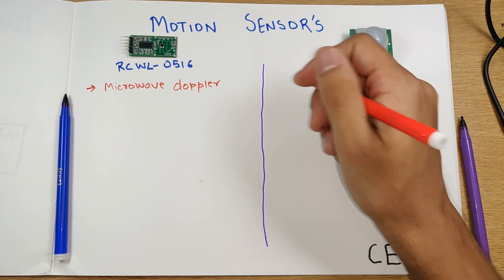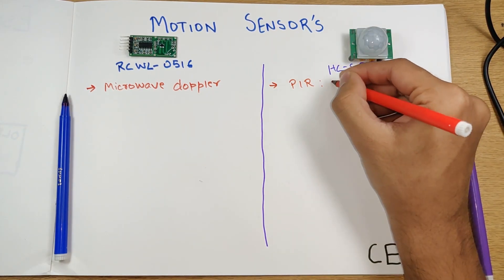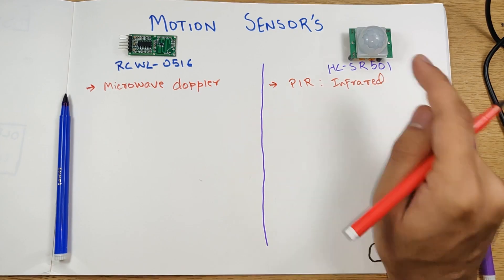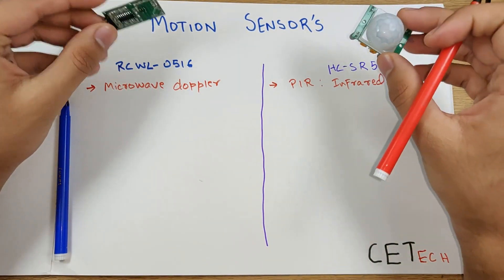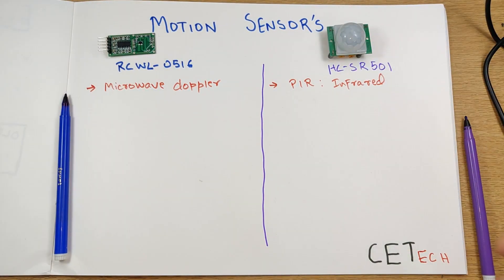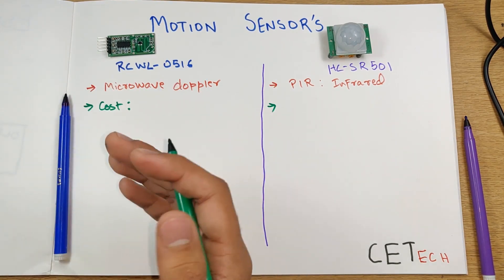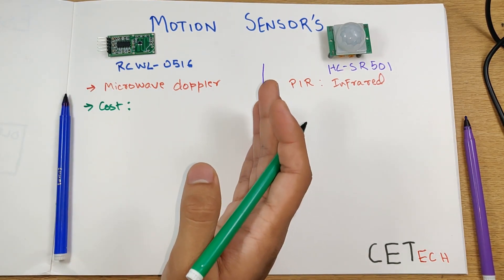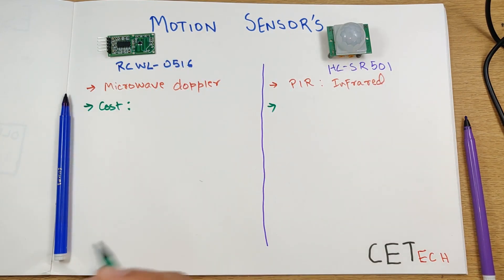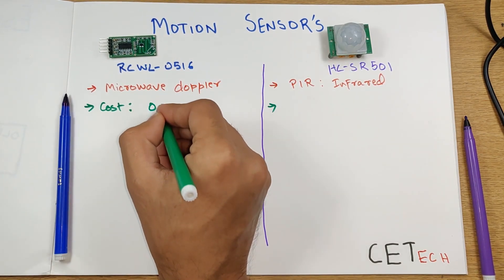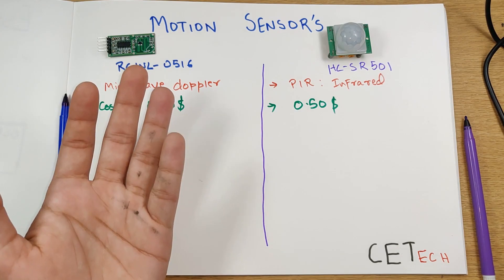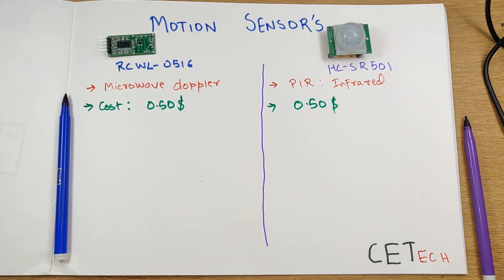The frequencies on which these sensors work is different. Moving on, the cost - both of the sensors are cheaply priced and both of them are available at around 50 cents. On that side they are equally expensive or cheap you may say.